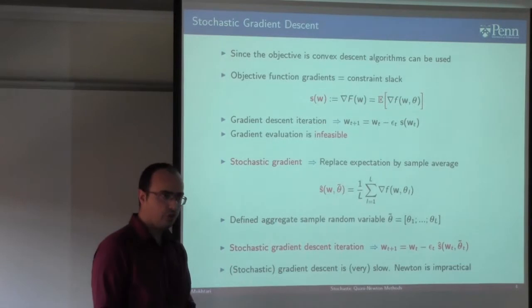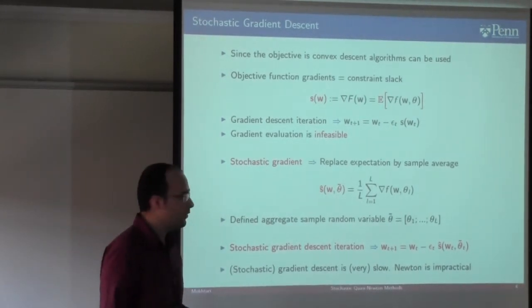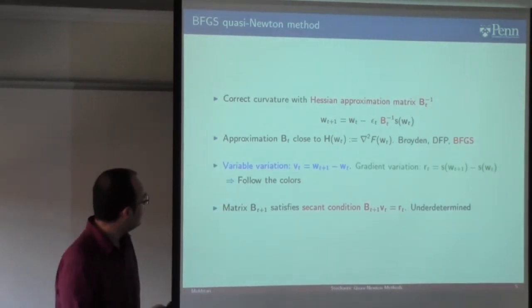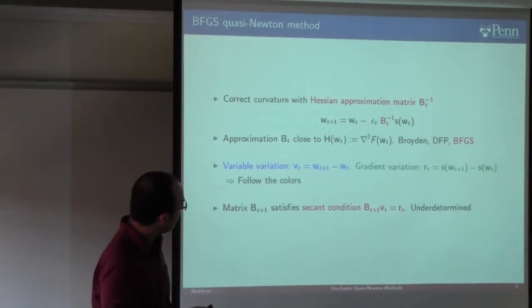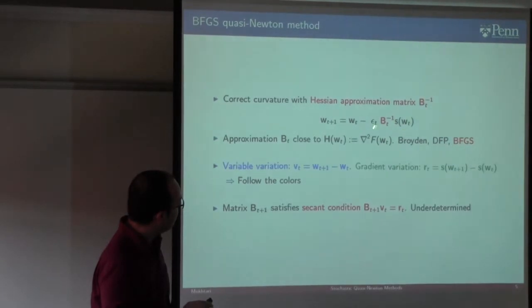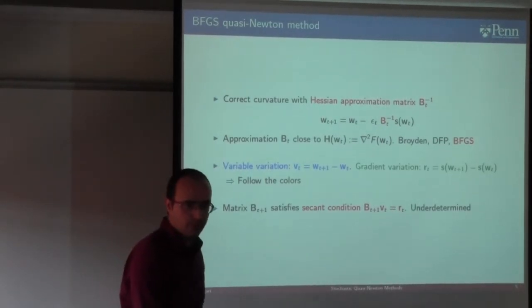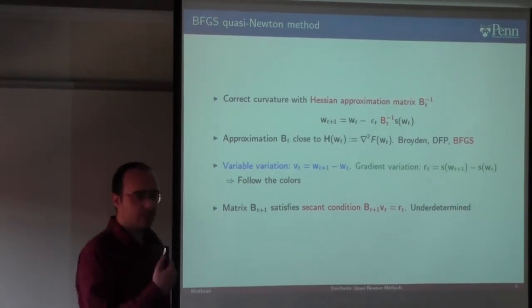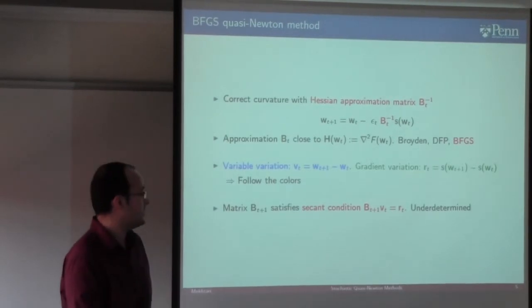The natural solution for this in the deterministic setting is Newton's method. But Newton's method requires computing the Hessian and its inverse, which may not be available or is computationally costly. The idea used in deterministic settings to resolve this is quasi-Newton methods. In quasi-Newton methods, the update differs from gradient descent by pre-multiplying the gradient direction by a matrix B — an approximation to the Hessian. If you put the exact Hessian, you get Newton's update. The best-performing method in deterministic settings is BFGS. There are also Broyden and DFP methods, but BFGS has the best performance.